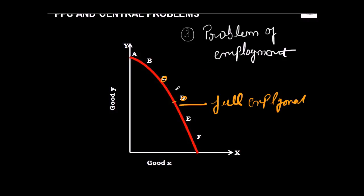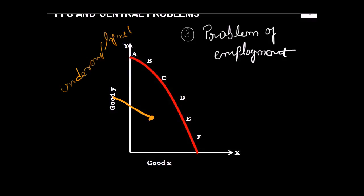Therefore, understand that a PPC curve is capable of showing employment of resources, and a point inside the PPC curve represents underemployment. This means you are not employing all the resources you have. If you have 1000 crore rupees to spend, maybe you're not spending the entire amount. A point on the PPC shows full employment, while a point outside is simply unattainable.